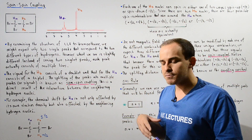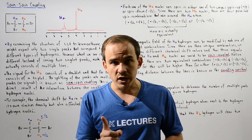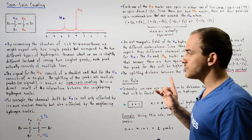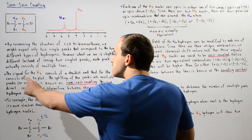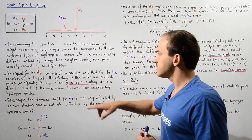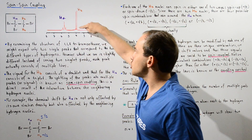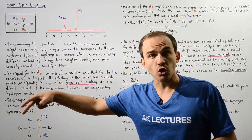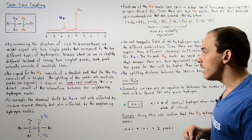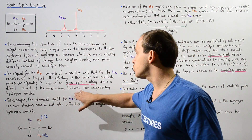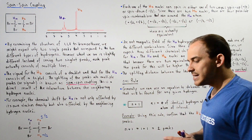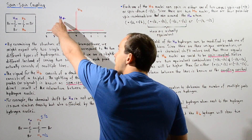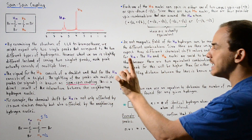Spin-spin coupling is a result of the interaction between our H atom of interest and the neighboring, adjacent identical H atoms. The signal for HB consists of a doublet and that for HA consists of a triplet. The splitting of peaks into multiple signals is known as spin-spin coupling, and is a direct result of the interaction between hydrogen nuclei. To see exactly what this means, let's determine why the HA peak consists of three individual peaks.